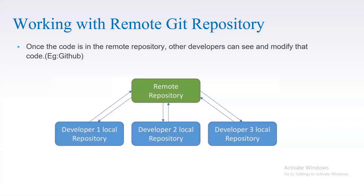So till now I've explained how you can work with the local repository — how to create a repository and manage code on your local system. Working with a remote Git repository has more use cases. A remote repository means there are a lot of developers contributing to the same repository. Local repositories won't be visible to anyone else, whereas with a remote repository there is a central place where the code is maintained and multiple people contribute to it. Each developer will clone from this central repository into their local PC and then work on it. GitHub is an example of that.